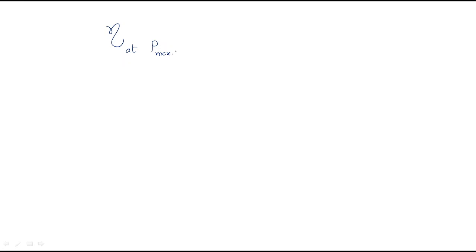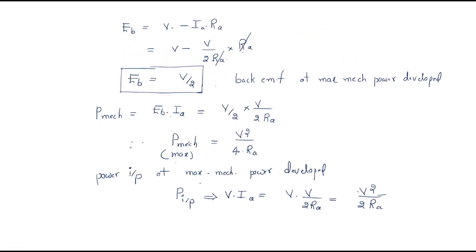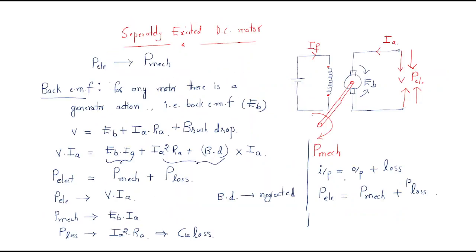The efficiency at maximum mechanical power developed is output divided by input, which is (V²/4Ra) divided by (V²/2Ra), multiplied by 100, giving 50 percent. So to get maximum mechanical power of the DC motor, efficiency becomes 50 percent, input is V²/2Ra, output is V²/4Ra, and back EMF is V/2. This is about the separately excited DC motor. I hope all of you understand the session, thank you.